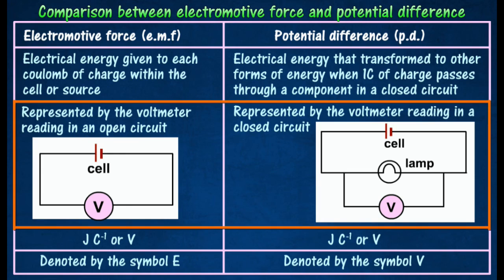Electromotive force is represented by the voltmeter reading in an open circuit, while potential difference is represented by the voltmeter reading in a closed circuit.